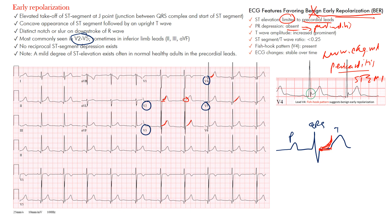If the ST elevation is not limited to the precordial leads, think STEMI or pericarditis. T wave amplitude — the height of the T wave — is prominent in early repolarization, elevated enough to notice but not to the degree seen in hyperkalemia. Then consider the ST segment to T wave ratio.